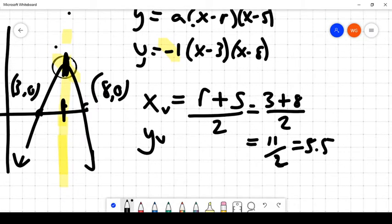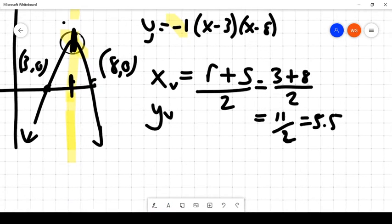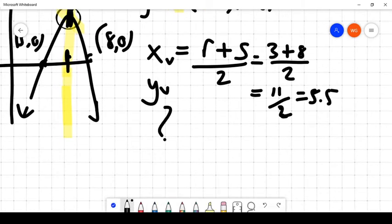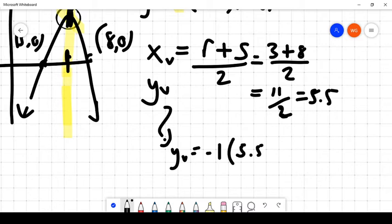And then if we wanted to figure out the y-coordinate of our vertex, that wouldn't be a challenge at all, because all we would do is we would just plug the value of x equals 5.5 into our original equation. So we would say y sub v equals negative 1 times (5.5 minus 3) times (5.5 minus 8). And if we did the math on that really quickly, what we'd find is we get 5.5 minus 3 is 2.5 times negative 1 times negative 2.5, because that's what 5.5 minus 8 is. We get positive 6.25.